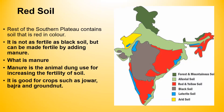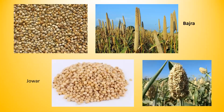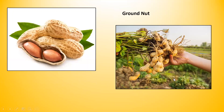Red soil — by its name, the soil is red in color. The rest of the Southern Plateau contains soil that is red in color, as you can see on the map of India. It is not as fertile as black soil but can be made fertile by adding manure. Manure is animal dung used for increasing the fertility of soil. Red soil is good for crops such as jowar, bajra and groundnut — the mungfali that you eat.